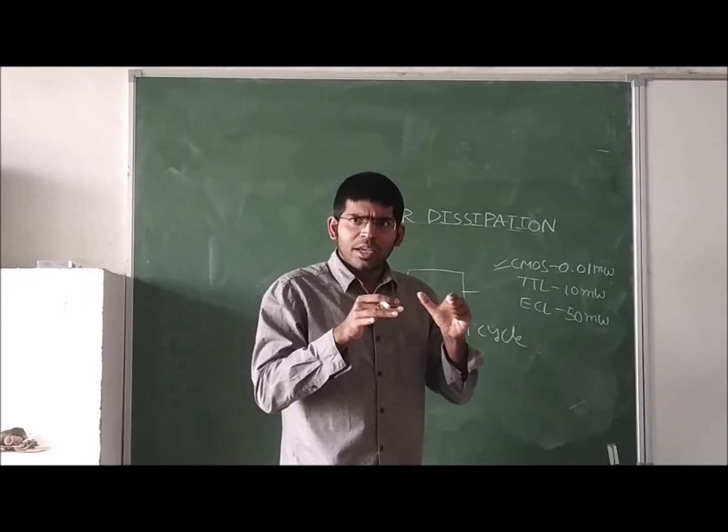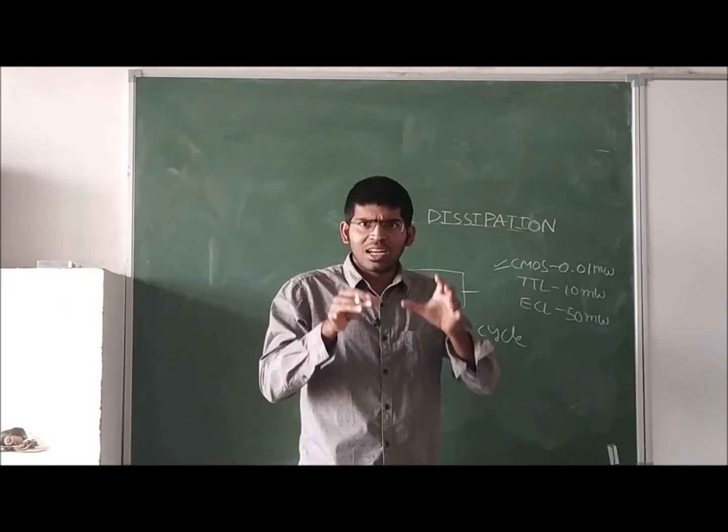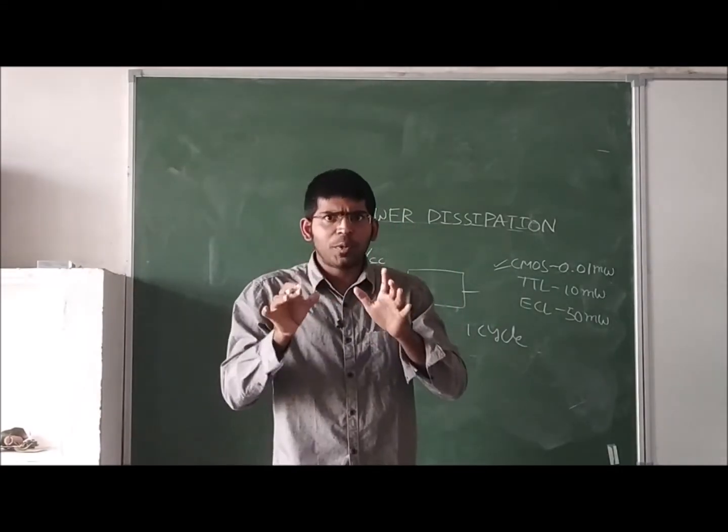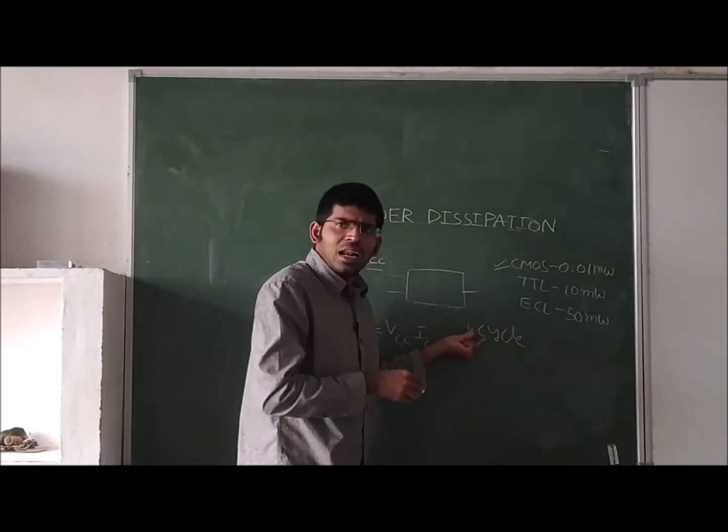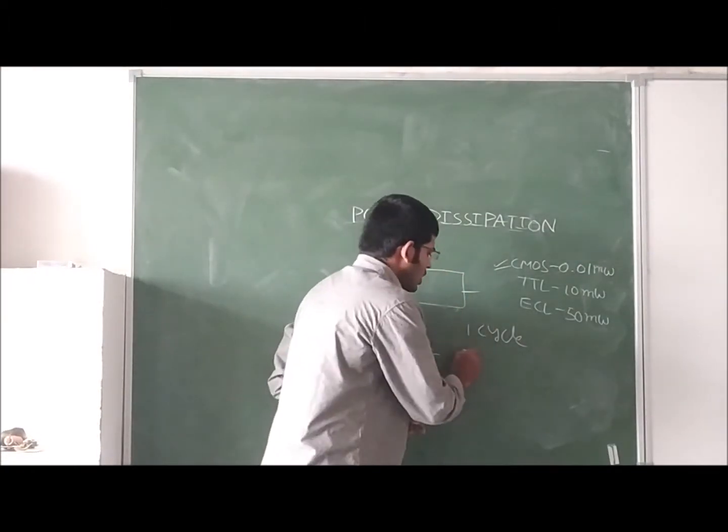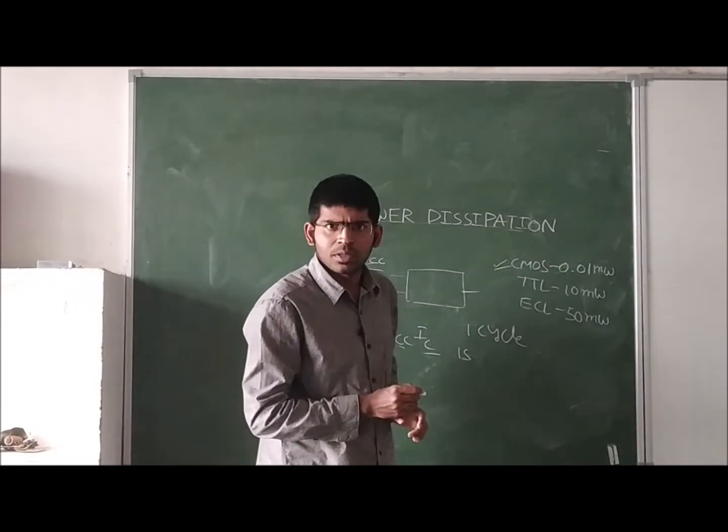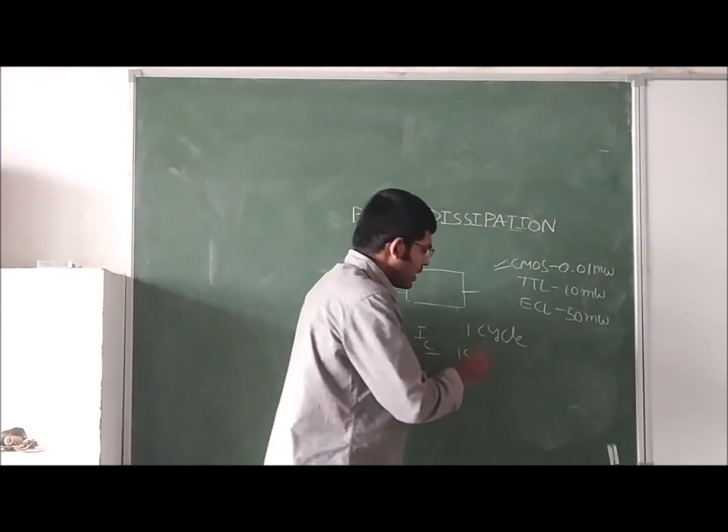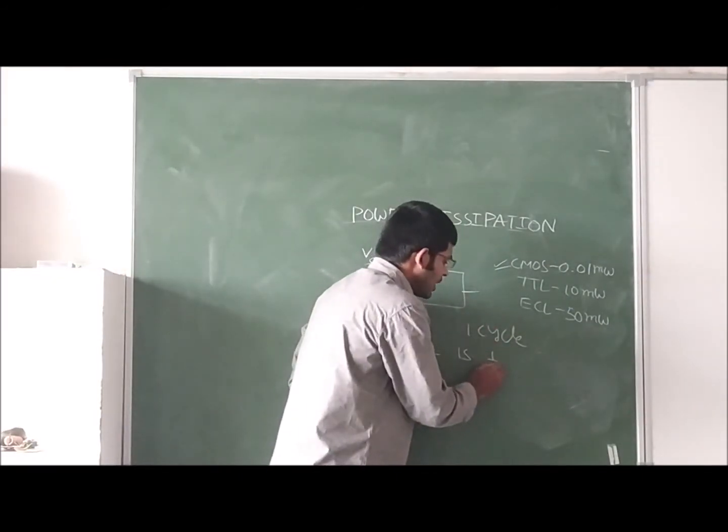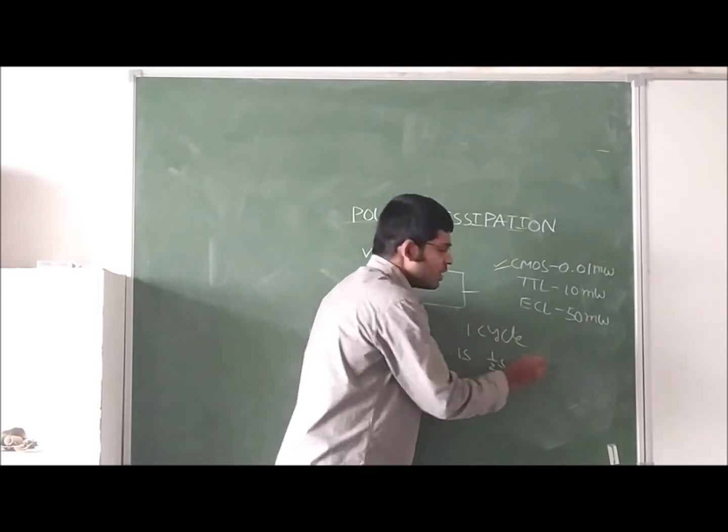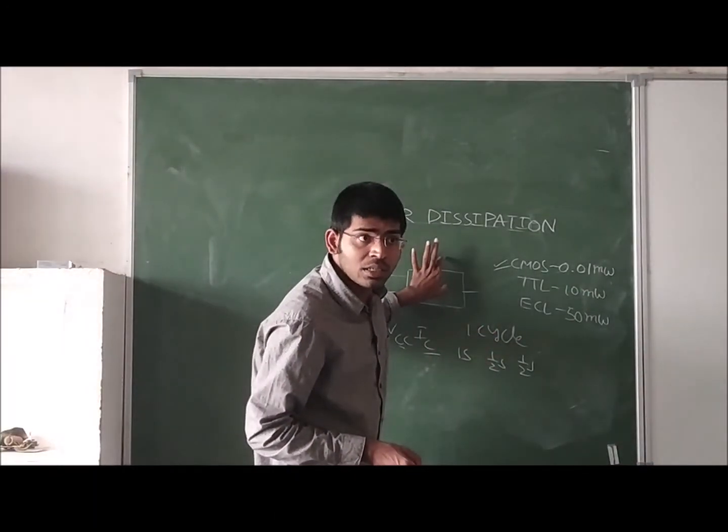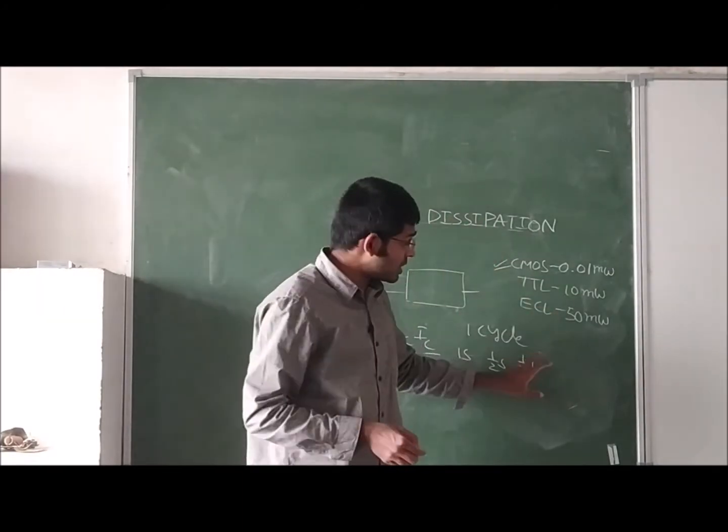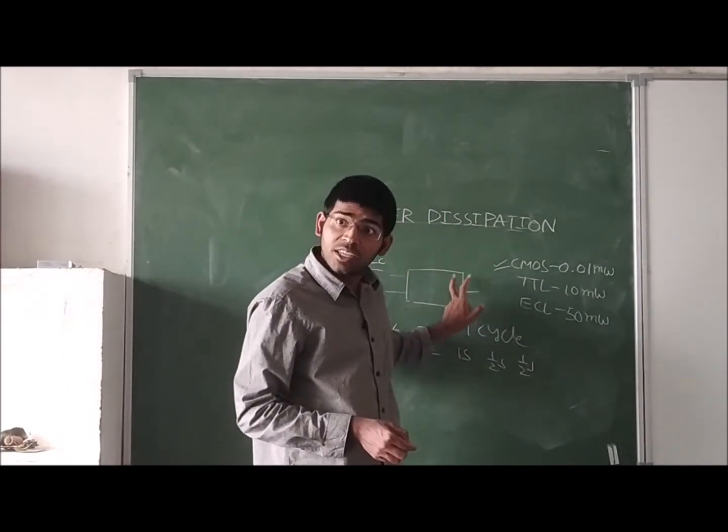For example, this digital electronics timetable, you have one period from this time to this time. Similarly, in that clock, one cycle means, for example, if it is one second, in that one second you are turning on the IC for half second and turning off the IC for half second. How much time the IC is in on condition? Half second. How much time it is in off condition? Half second.